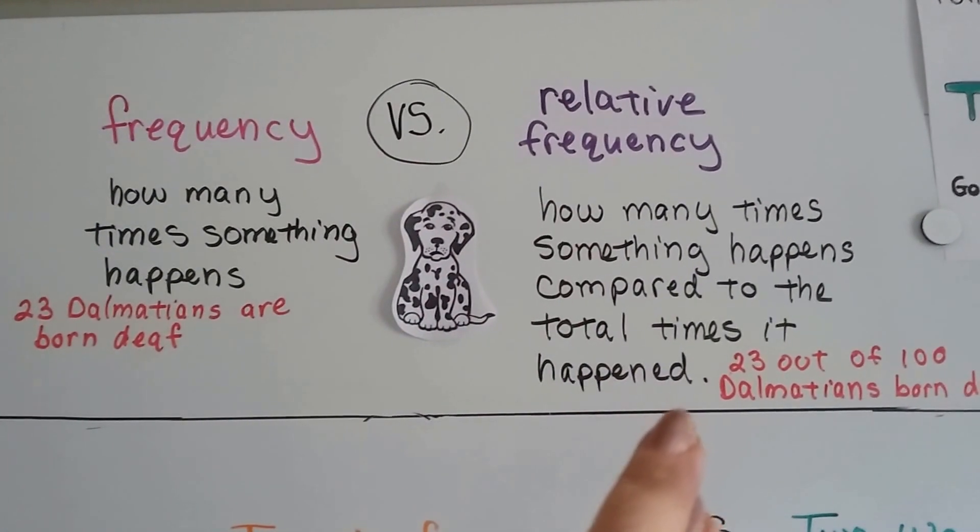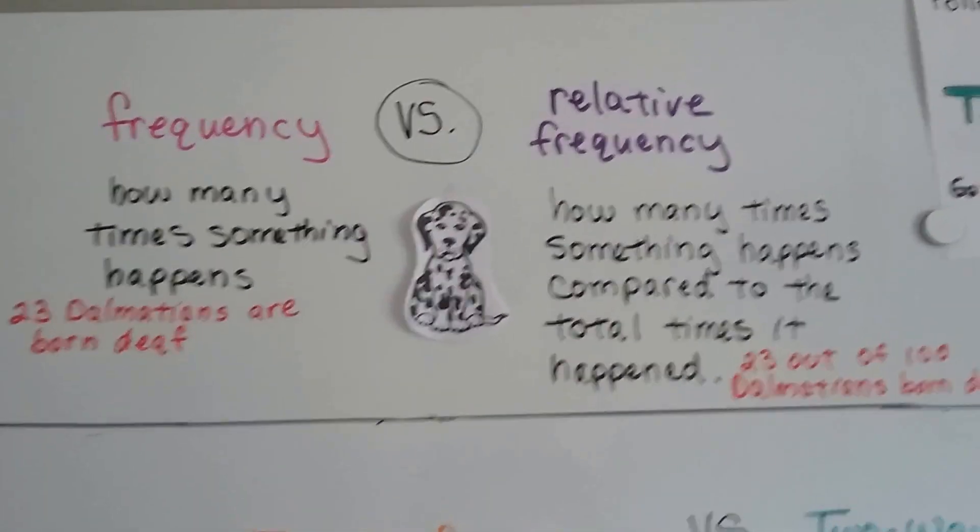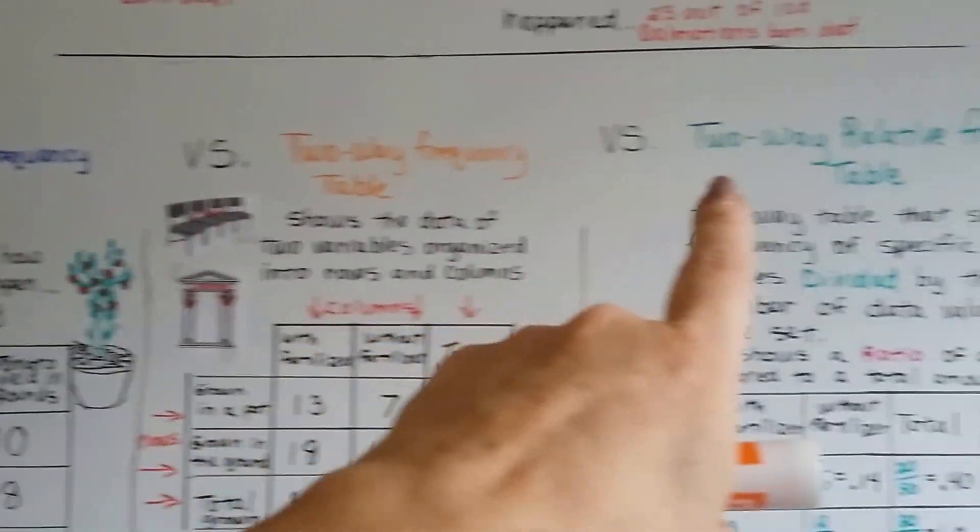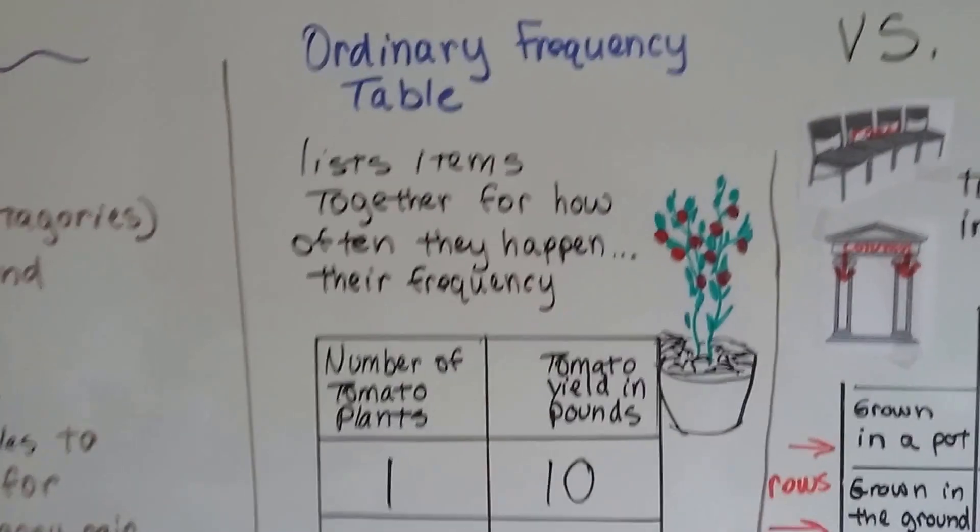Okay, it's only 23 out of 100, so you get a little bit more information. See? You can put it into perspective. So, we're going to compare an ordinary frequency table to a two-way frequency table to a two-way relative frequency table. We talked about this before, so I'm going to go over it very quickly.